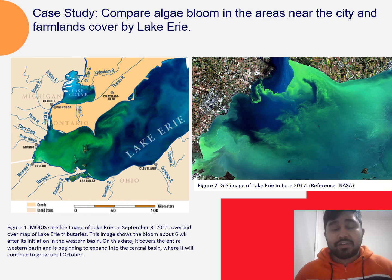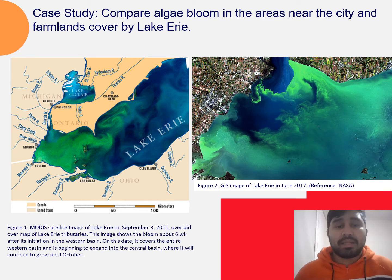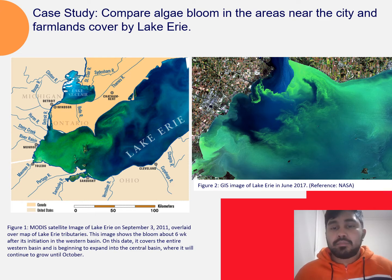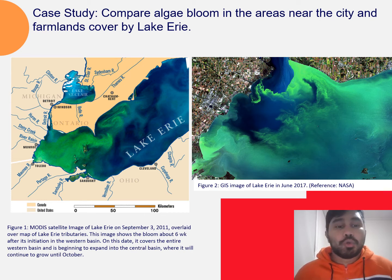In our case study, we compare the algae bloom in areas near the city and farmlands covered by Lake Erie. According to the National Academy of Science of the United States of America, in 2011, Lake Erie experienced the largest algae bloom recorded in history, with a peak intensity over three times greater than any previously observed bloom. We find that trends in agricultural practices, increased precipitation, low lake circulation, and crescent conditions conspired to yield the record-breaking 2011 Lake Erie algal bloom.